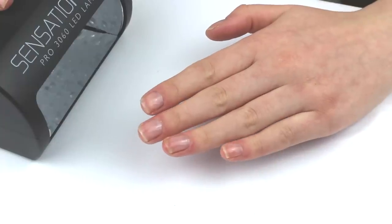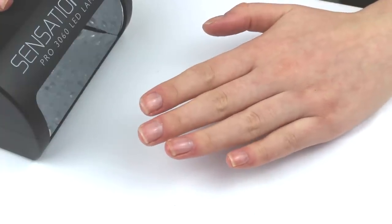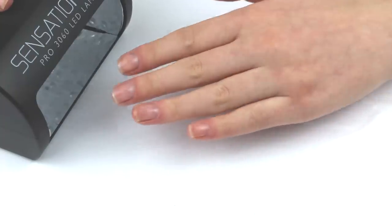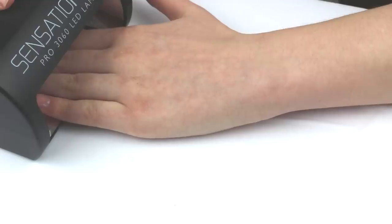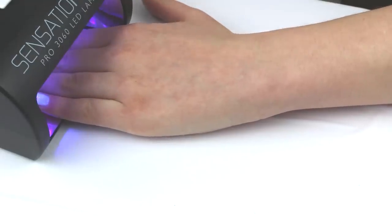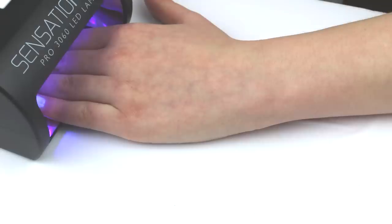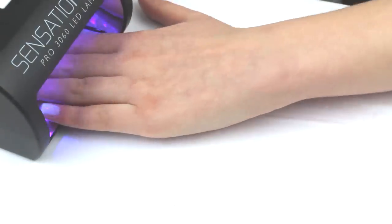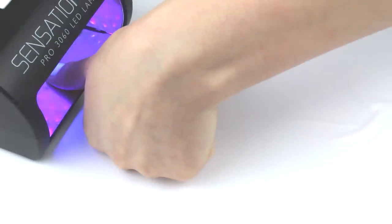I'm going to cure my base coat in the Sensation Nail LED lamp for 30 seconds, starting with my fingers and then moving onto my thumb separately. The lamp will beep after 30 seconds letting you know when to switch hands. The lamp also switches itself off after 60 seconds.